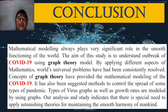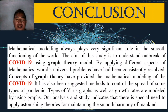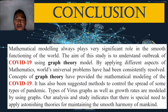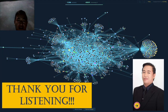Mathematical modeling always plays a very significant role in the smooth functioning of the world. The aim of this study is to understand the outbreak of COVID-19 using a graph theory model. By applying different aspects of mathematics, the world's universal problems have been consistently resolved. Concepts of graph theory have provided the mathematical modeling of COVID-19 and suggested methods to control the spread of some types of pandemic. Types of virus graphs as well as growth rates are modeled using graphs. Our analysis indicates a special need to apply mathematical theory for maintaining the smooth harmony of mankind. Thank you for listening and have a good day.